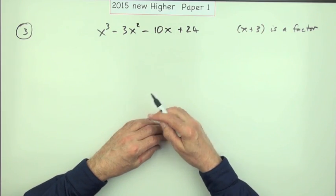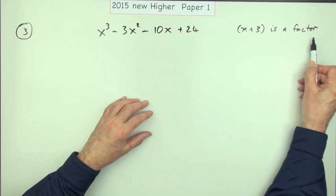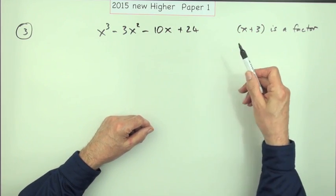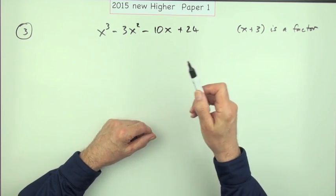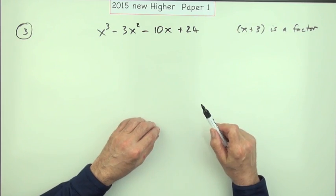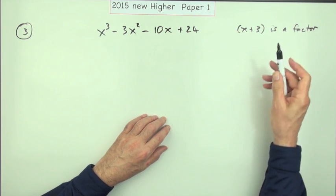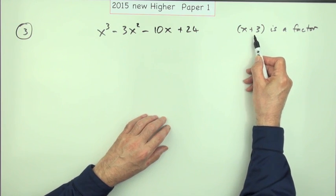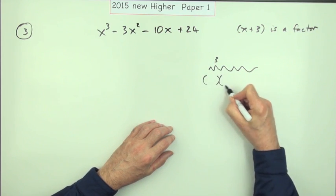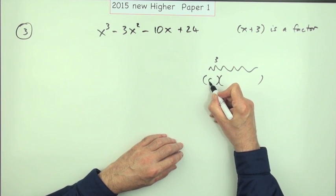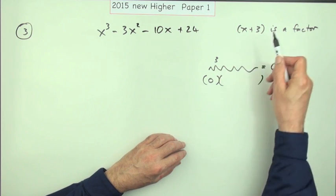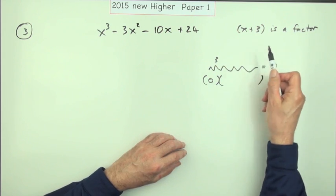Strictly speaking you should go by the wording of the question. If it said 'show this is a factor,' that means there's a division involved — you should divide it in and show the remainder is zero. If it said 'show that negative 3 is a root,' then you put that in and show the expression comes to zero. They are interchangeable because of the remainder theorem: if this is a factor, its root must be the root of the expression. If you factorize a cubic and the value of that bracket comes to zero, the whole expression must come to zero because it's a factor involved in a multiplication. So the two terms are equivalent: x minus 3 is a factor, or x equals negative 3 is a root.